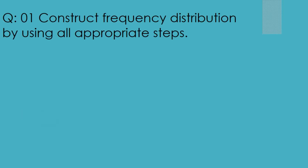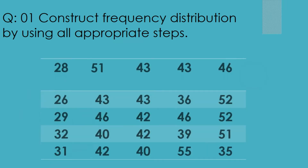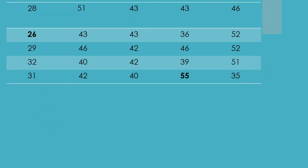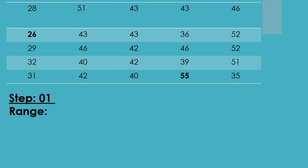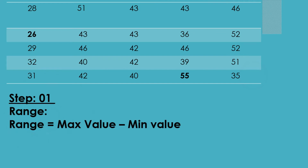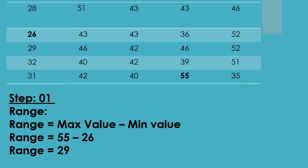For question one, construct the frequency distribution using all appropriate steps for the given data. Step one is to find the range. The maximum value is 55 and the minimum value is 26, so the range equals 55 minus 26, which gives 29.